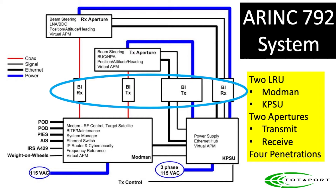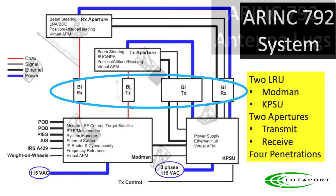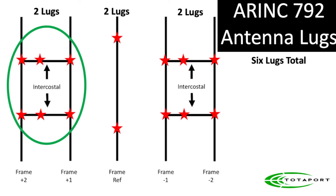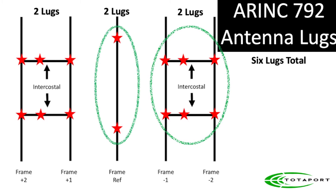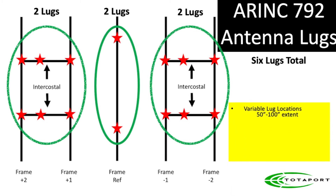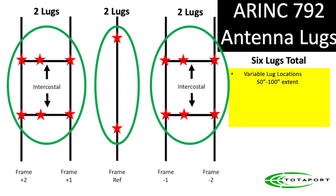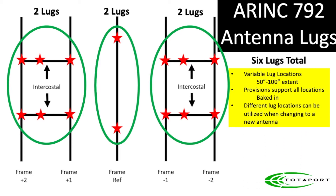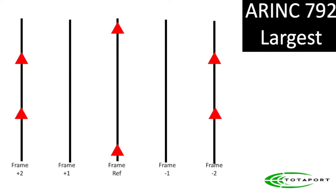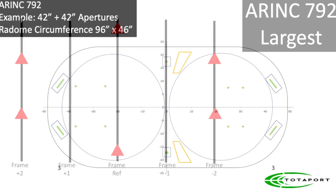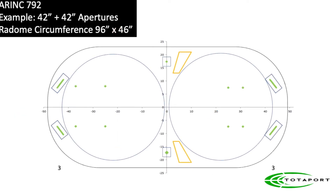ARINC 792 has six lugs, but they can be installed in different relative locations: any two in the forward position, any two in the rear position, and always two in the middle. This spans three to five frames, or about 50 to 100 inches, and these provisions are baked in — you can select any position and pick another later if needed. The largest ARINC 792 span, across five frames, can accommodate two 42-inch circular apertures.